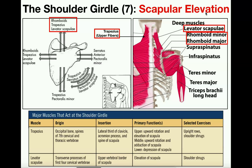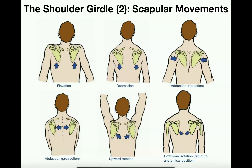First, we're going to talk about scapular elevation using the same image from the previous video. We can see the scapula here, and scapular elevation involves gliding of the scapula on either side upwards. This is a movement you can do independently of a shoulder joint movement — you don't have to be moving your humerus. For example, if you're holding two dumbbells and you just shrug your shoulders up, you're not moving your humerus at all; you're just elevating your scapula upward.